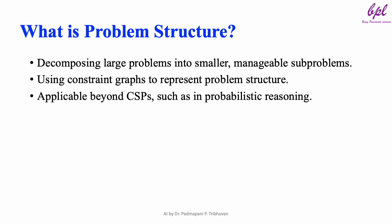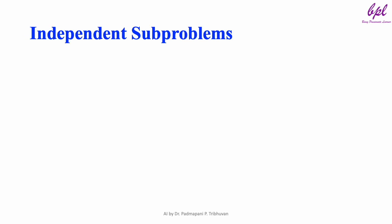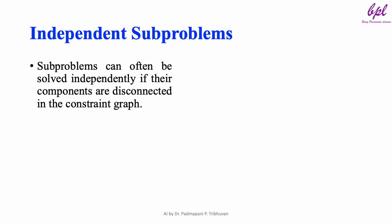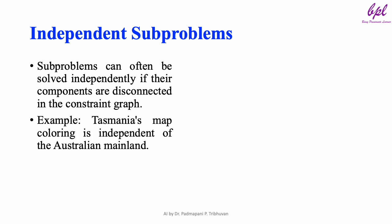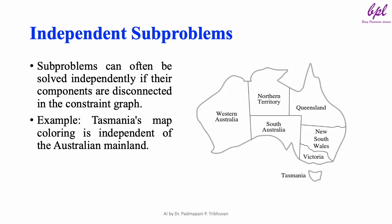Independent subproblems: Some problems can be divided into independent subproblems. For example, in the map coloring of Australia, Tasmania is isolated from the mainland. Any valid solution for the mainland can be combined with any valid solution for Tasmania to solve the entire problem. By splitting down like this, we can drastically reduce the computational complexity.